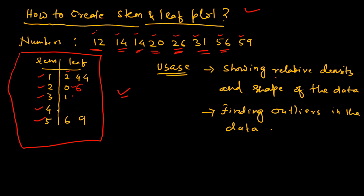The first thing this is used for is to show the relative density and shape of the data, pretty much like the purpose for which histogram is used. You can also find the outliers in your data set by looking at the stem and leaf plot.